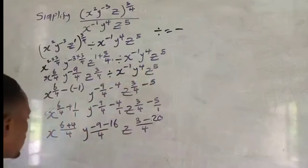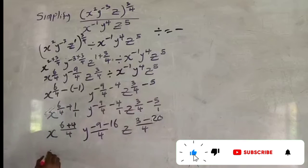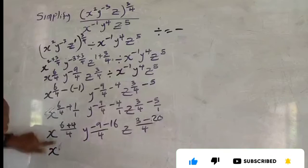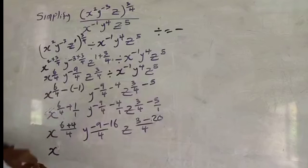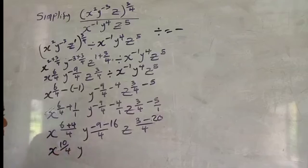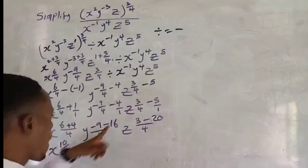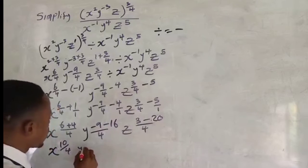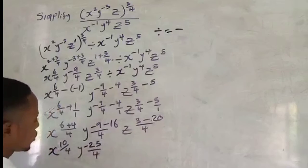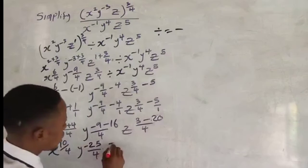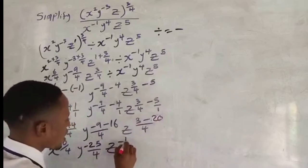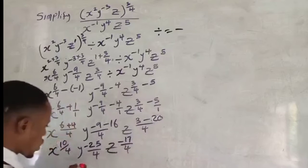Adding those together: s is raised to power 6 plus 4 equals 10 over 4. For y: minus 9 minus 16 gives minus 25 over 4. For z: 3 minus 20 gives minus 17 over 4. So now we have s raised to 10 over 4, y raised to minus 25 over 4, and z raised to minus 17 over 4.